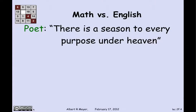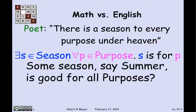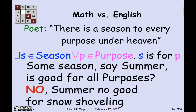Let's look at another example of the same kind. The poet says: "There is a season to every purpose under heaven" — a variant of a biblical phrase. The literal translation would be: there exists an s that's a season, such that for every p that's a purpose, s is for p. From the way quantifiers work, that means there's some one season — say summer — that's supposed to be good for all purposes. Well, that's not right, because summer is not good for snow shoveling. So even though it's phrased "there is a season to every purpose," that's not the intended translation.